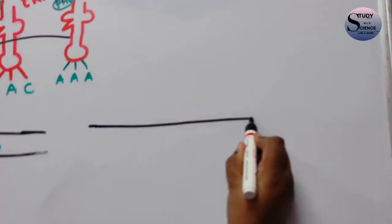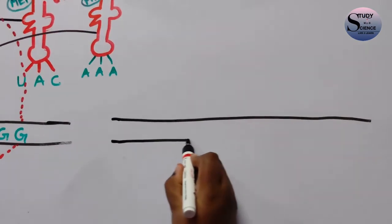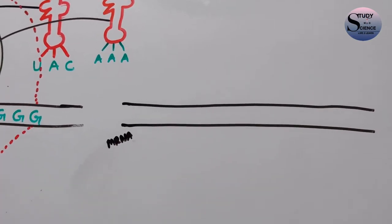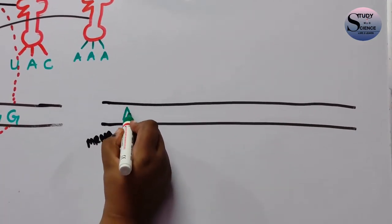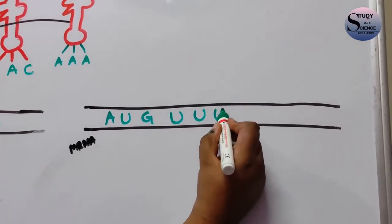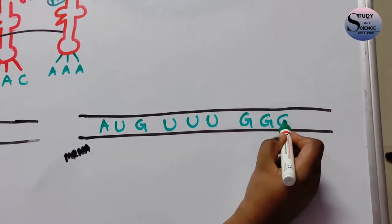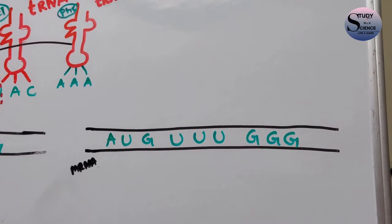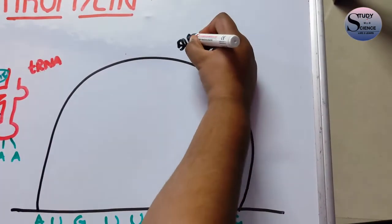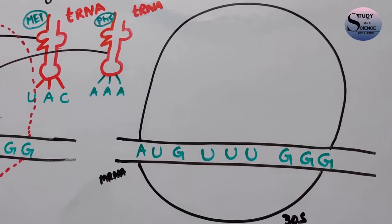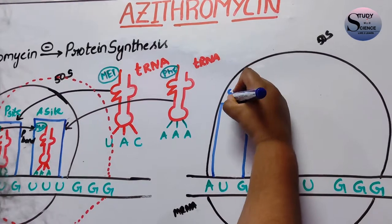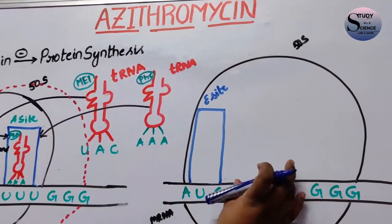Now the ribosome moves one triplet forward. After moving one triplet forward, the old mRNA contains the old codons like AUG, then UUU, and also GGG. After moving one triplet forward, the position of the mRNA changes accordingly — this is the 50S ribosome and this is the 30S ribosome. The subunits also get changed: the P site becomes the E site, and the A site becomes the P site.